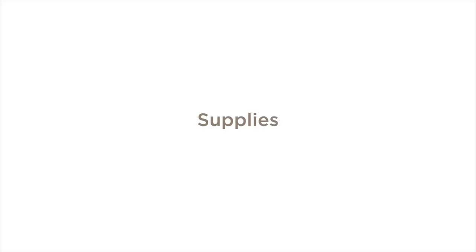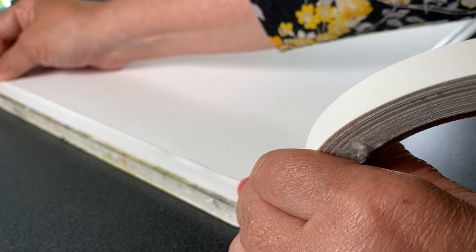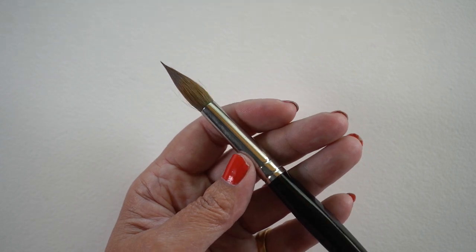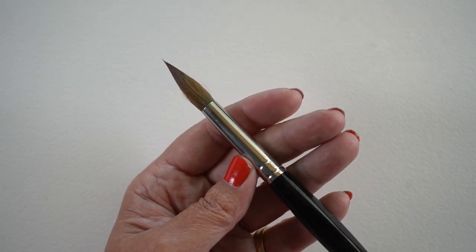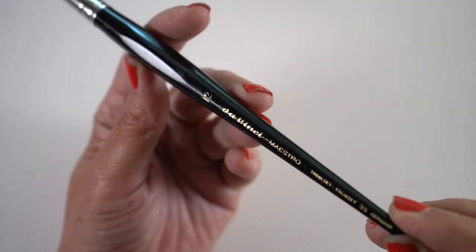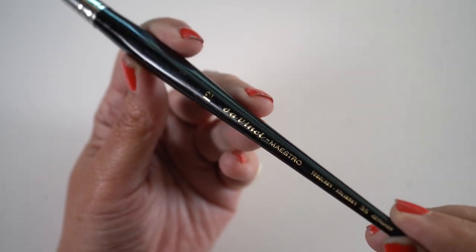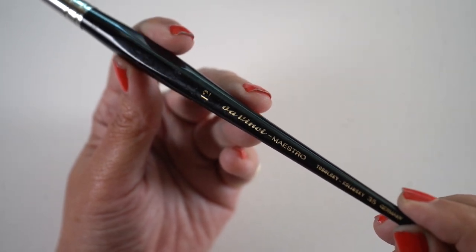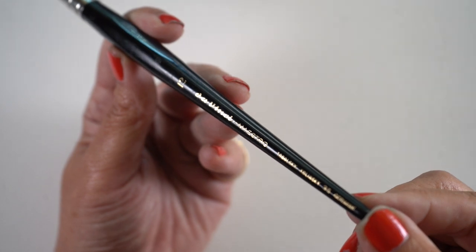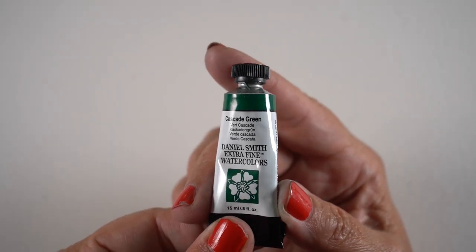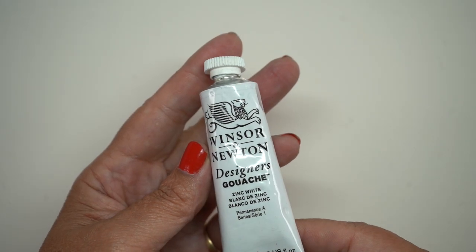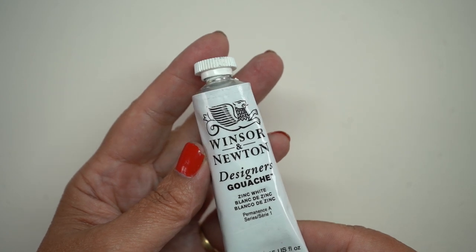Let's talk about supplies for today's project. I'm using Arches rough watercolor paper — I love the texture — taped to a board with artist tape. The brush is the Da Vinci Maestro. I'm trying to find a replacement for a favorite brush that's no longer available, and this one is rapidly becoming a favorite. It's pricey, but it works beautifully. The only color I'll be using is Cascade Green, with the exception of a tiny bit of white gouache at the very end for highlights on the berries.